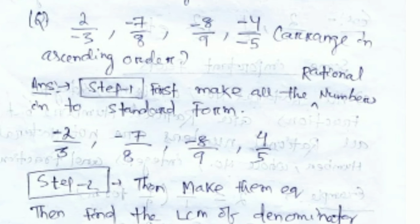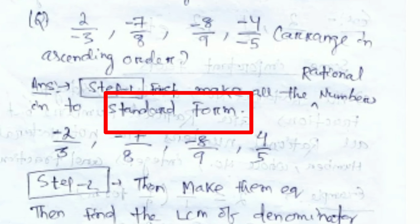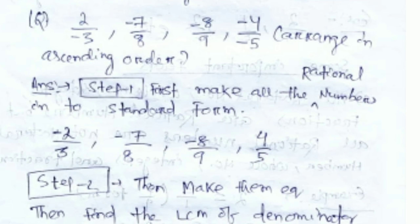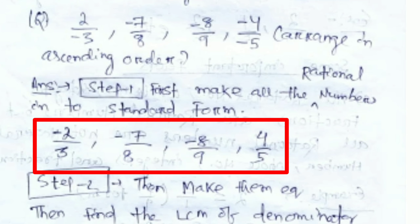Our first question is: minus 2 by 3, minus 7 by 8, minus 8 by 7, minus 4 by minus 5. Before going to solve, we should know the steps. First, make all the individual rational numbers in standard form. After converting to standard form, it becomes: minus 2 by 3, minus 7 by 8, minus 8 by 7, and 4 by 5.